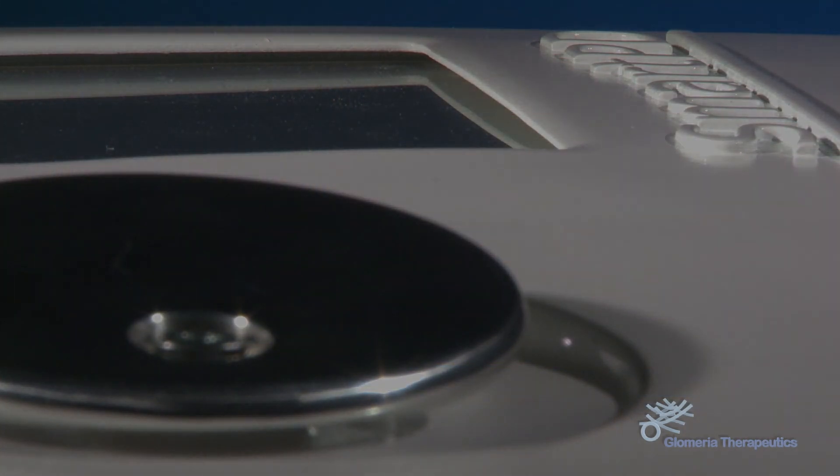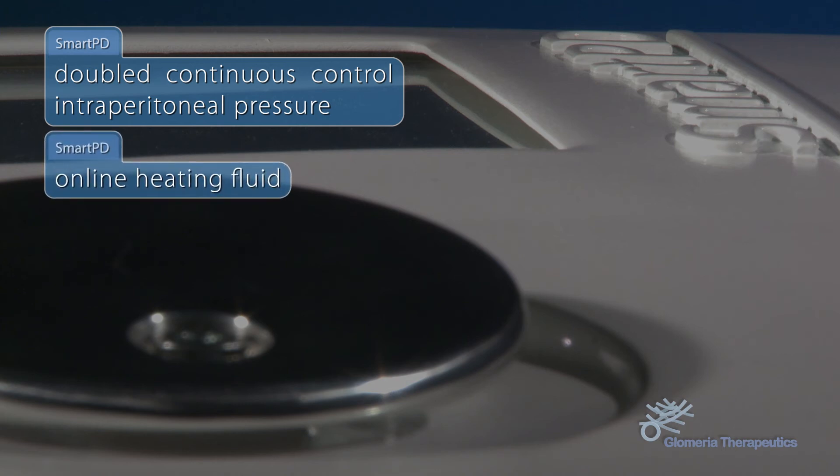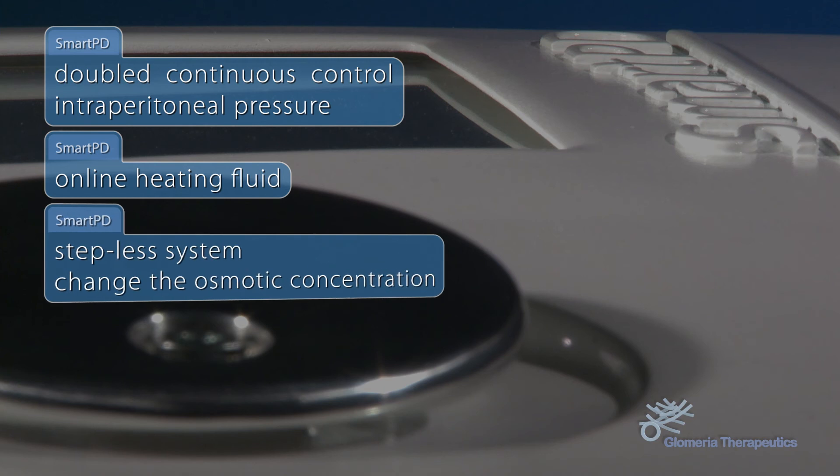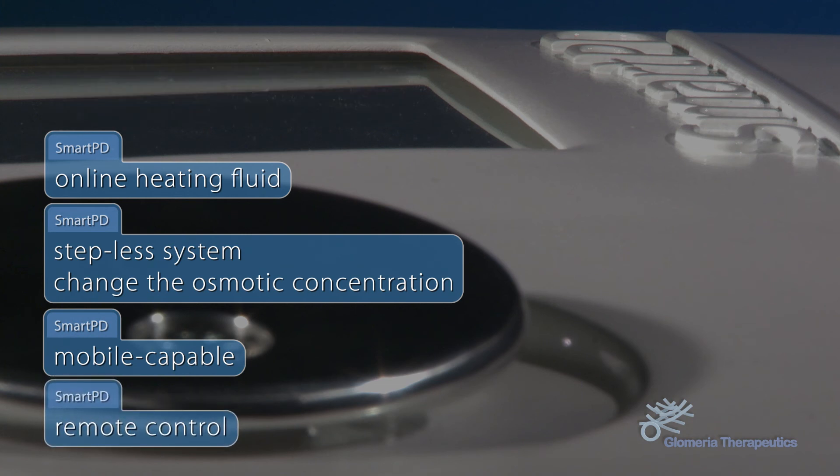Glomeria's SmartPD provides doubled continuous control of intraperitoneal pressure, online heating of the dialytic fluid, an innovative stepless system to change the osmotic concentration of the incoming peritoneal solution, and a refined mobile capable remote control of the cycler.